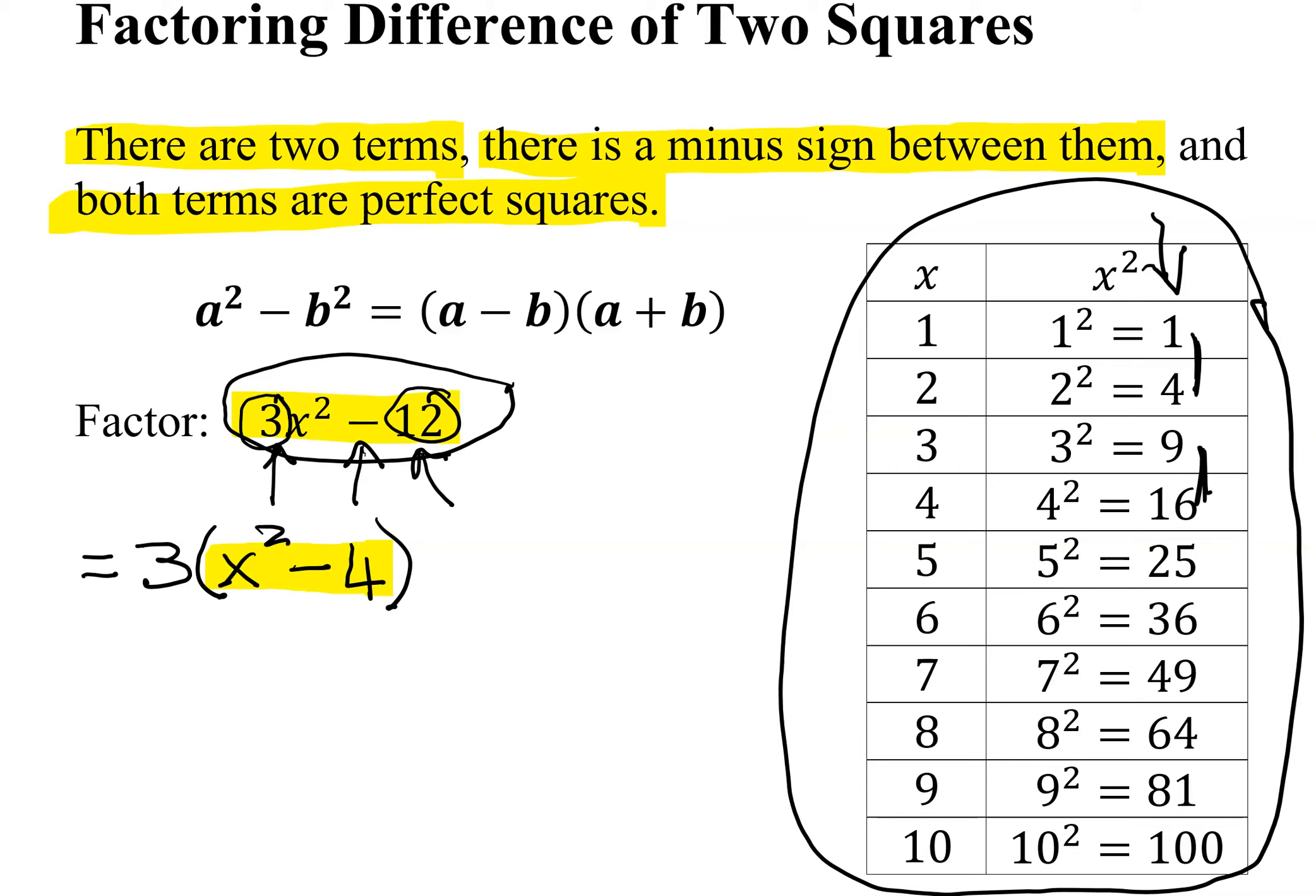Well there are definitely two terms that have a minus sign between them. And are both terms perfect squares? Well what number is in front of the x squared? It's a 1. Is 1 a perfect square? Yes, it's 1 squared. And 4, is 4 a perfect square? Yes, it's 2 squared.